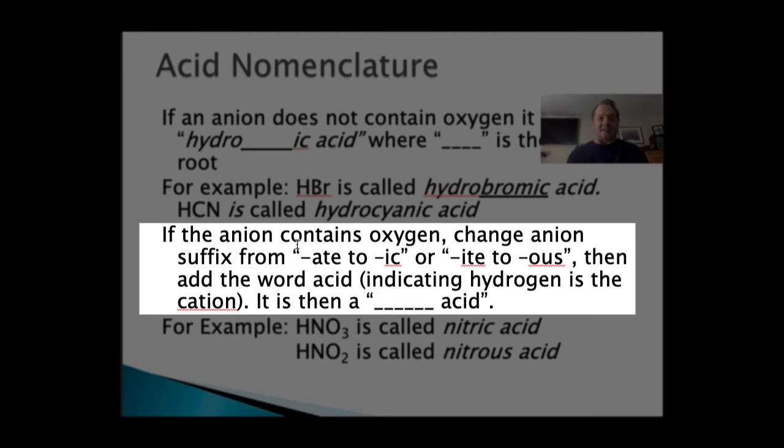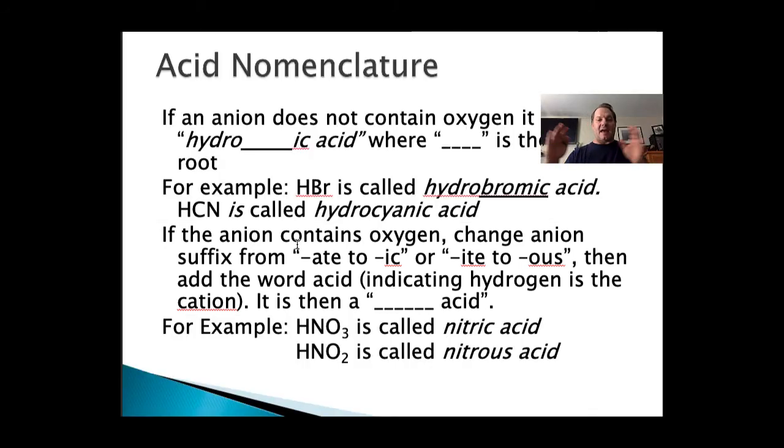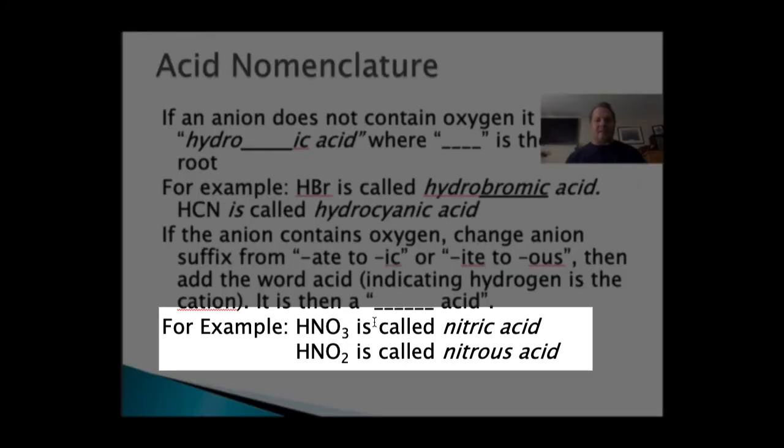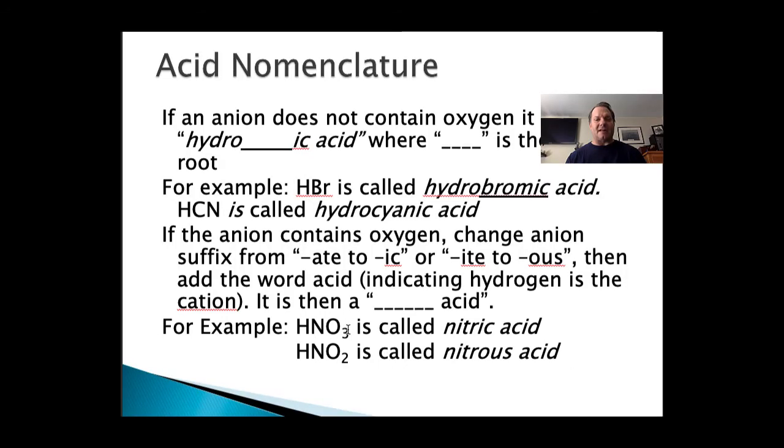If the anion does contain oxygen, then we change the anion suffix from -ate to -ic, or -ite to -ous. If you put that all together, it sounds like a disease. -ate to -itis. -ate to -ic, -ite to -ous. Then we add the word acid, indicating that hydrogen is the cation. So it is then a blank acid. So HNO3 is nitric acid. HNO2 would be nitrous acid. Why? NO3 is called nitrate. It becomes nitric. NO2 is nitrite, so it becomes nitrous. -ate to -ic, -ite to -ous.